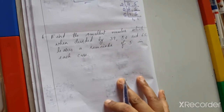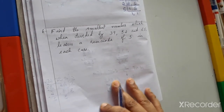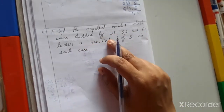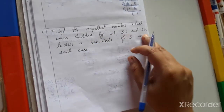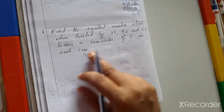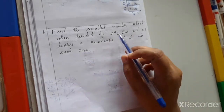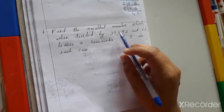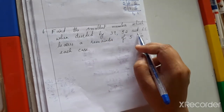Next, sixth question: find the smallest number which when divided by 39, 52 and 65 leaves a remainder of 5 in each case. Since a remainder is involved and it's the smallest number, we find the LCM first. So find the LCM of 39, 52 and 65.